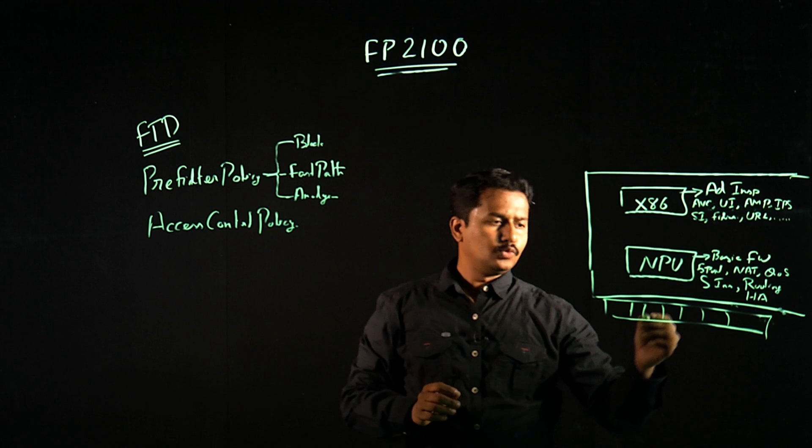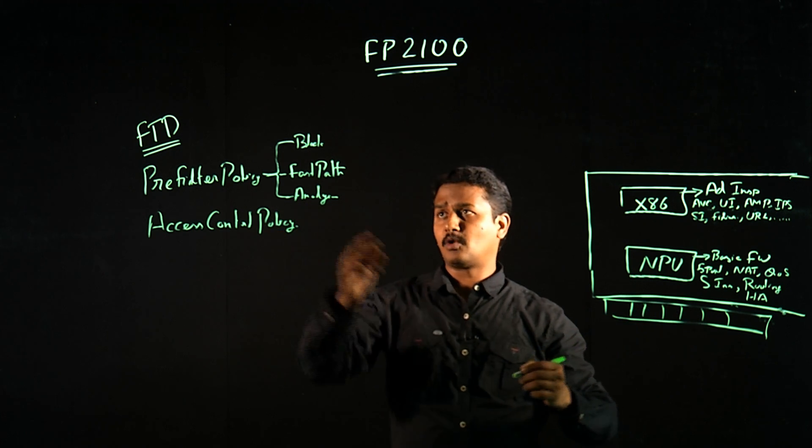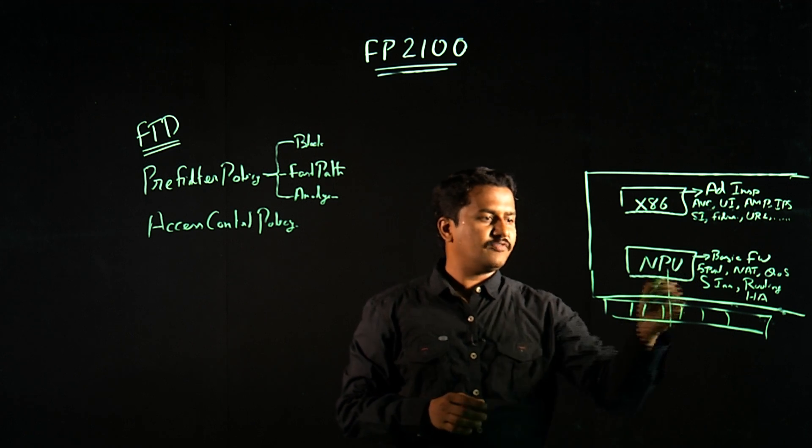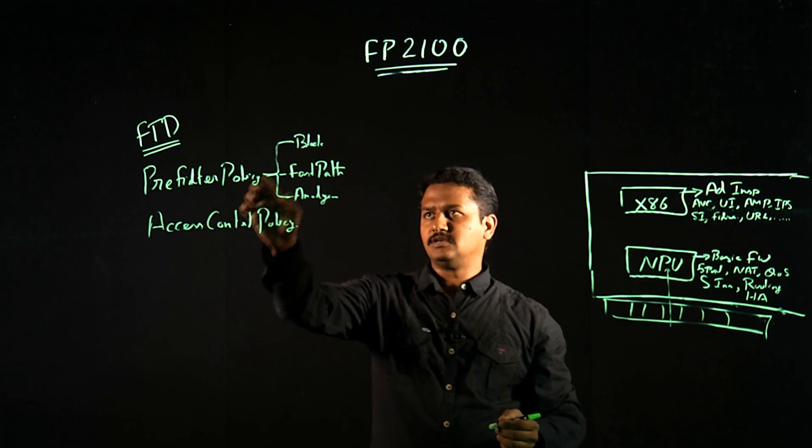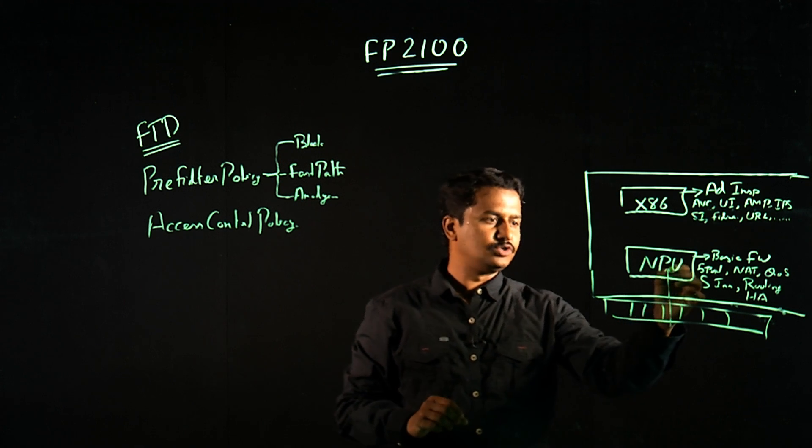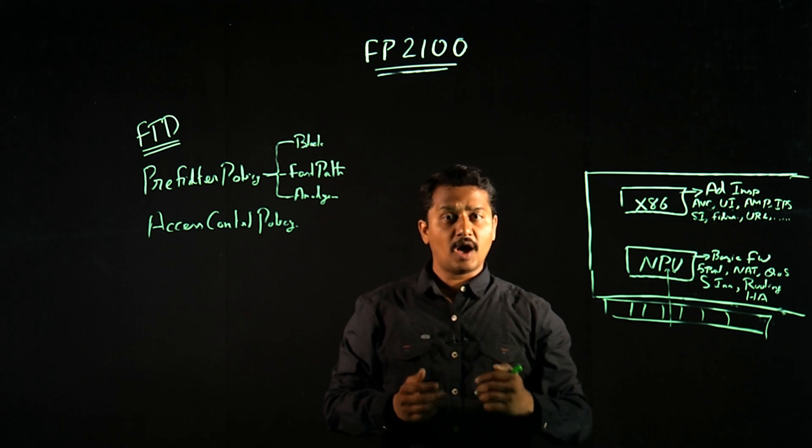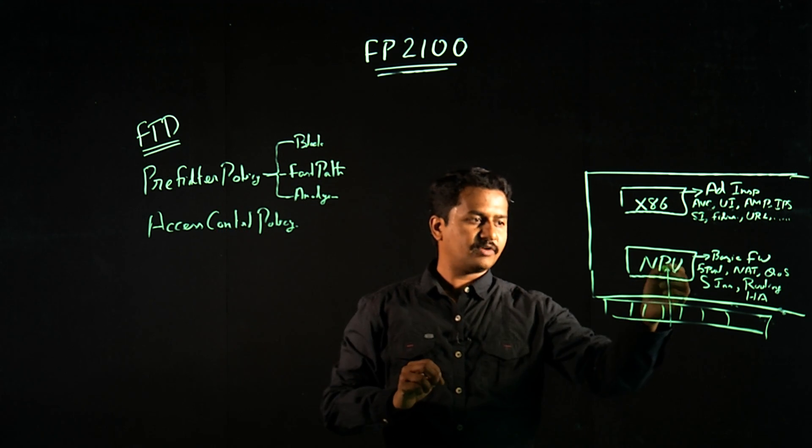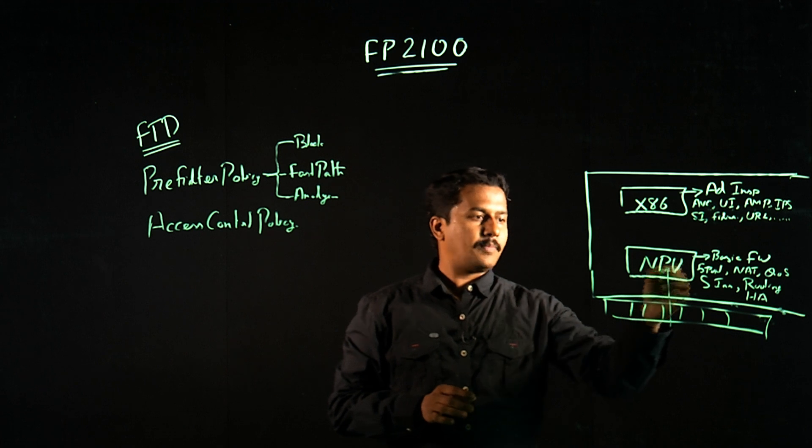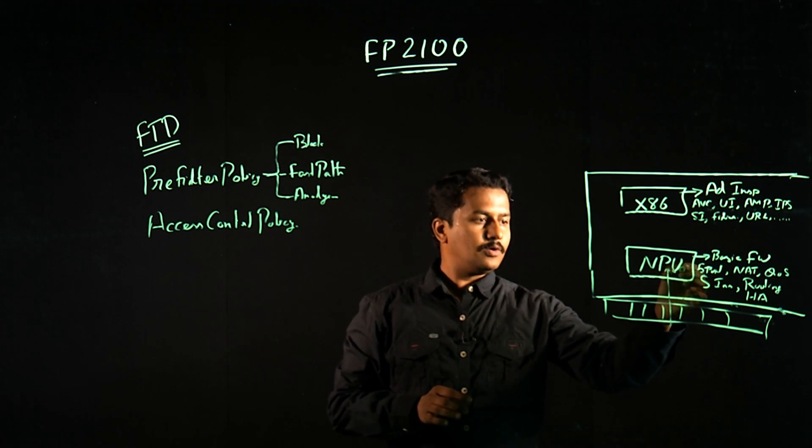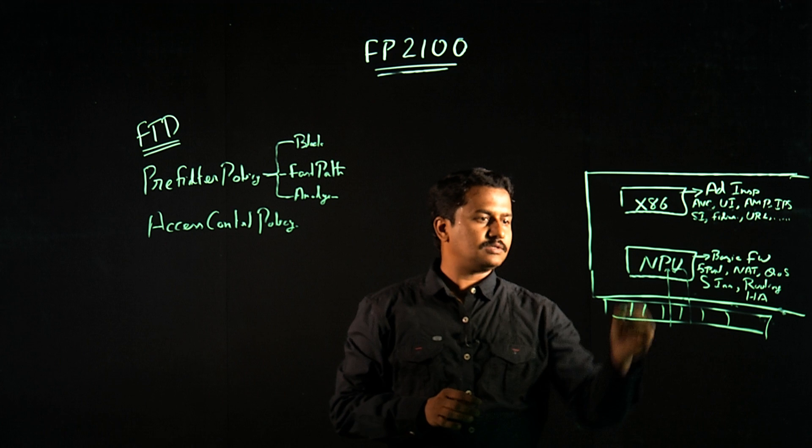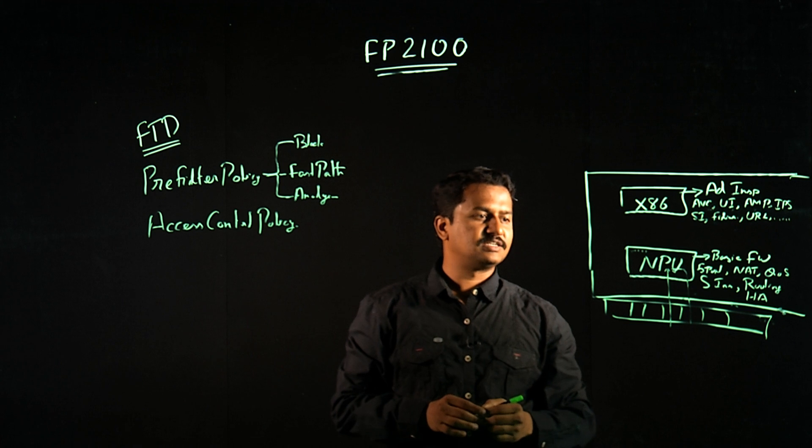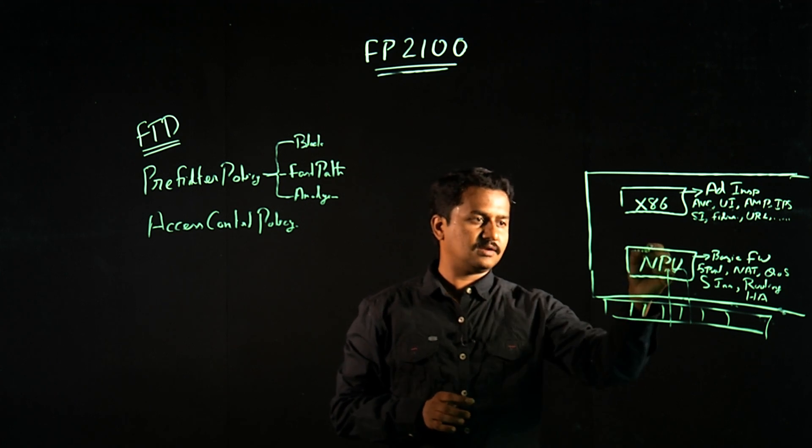Basically, if you create a pre-filter policy with action block, when there is a traffic which reaches the NPU, and if this packet matches any one of the pre-filter policy with the action block, the packet is dropped at NPU level. And if you have a policy with the action fast path, if the traffic matches that particular policy, the packet is routed back to the egress interface and based on the routing table, and at the same time creates a stateful connection table.